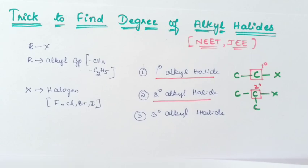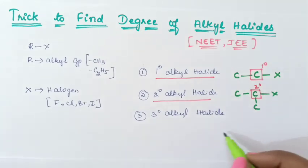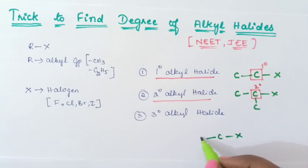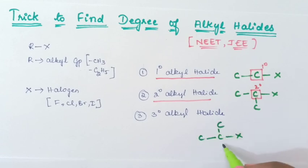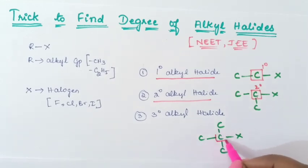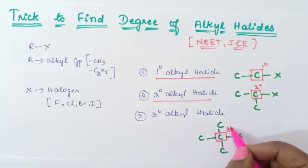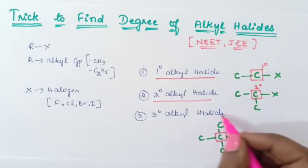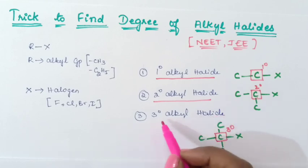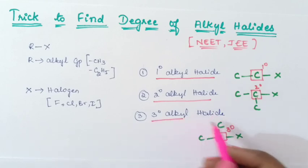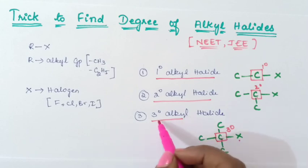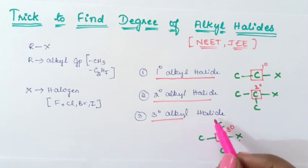Now we will see what is tertiary alkyl halide. Here, the halogen is connected to a carbon, and if this carbon is connected to three other carbon atoms, then we call it a tertiary carbon, and this is called a tertiary alkyl halide. That is, a halogen connected to a tertiary carbon is known as tertiary alkyl halide.